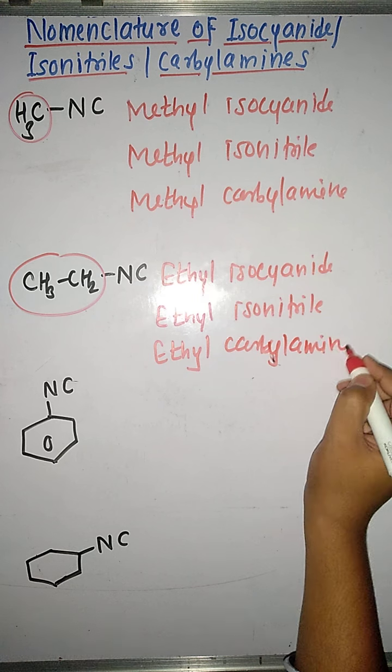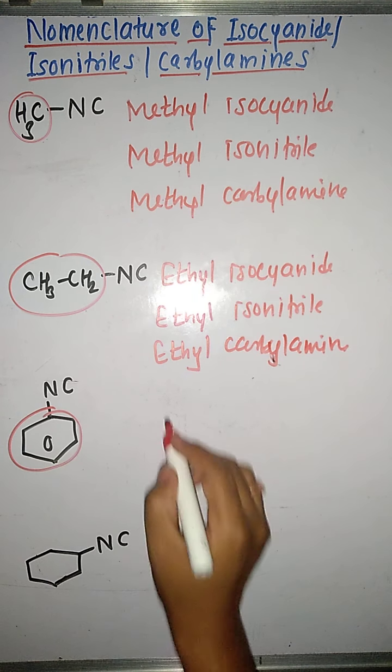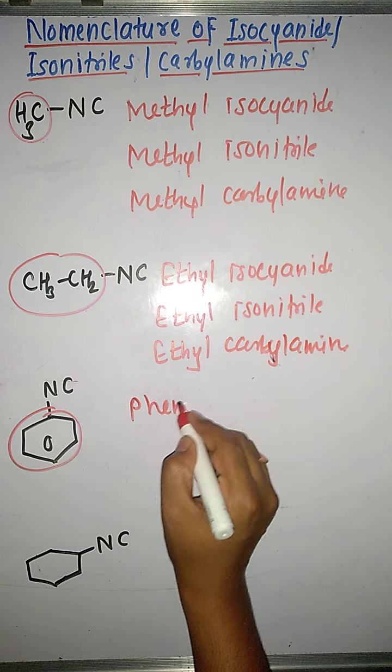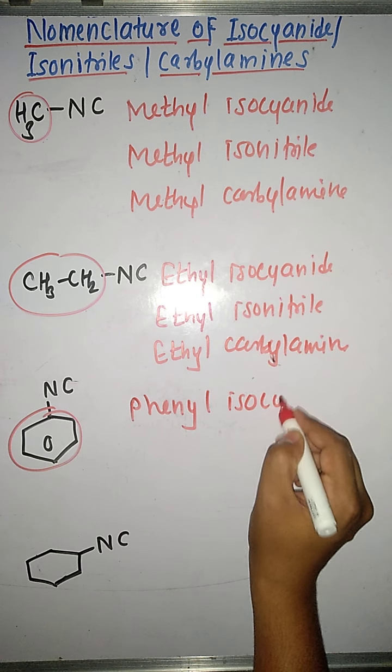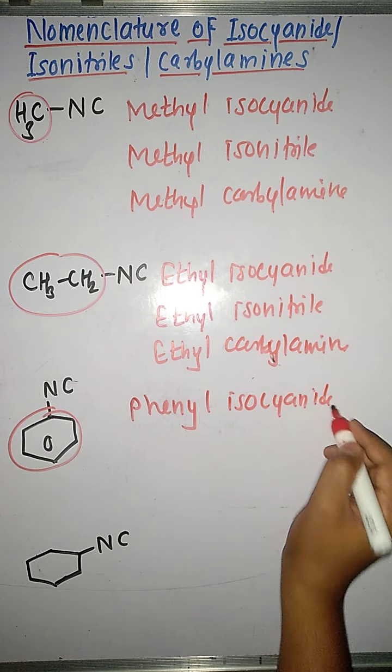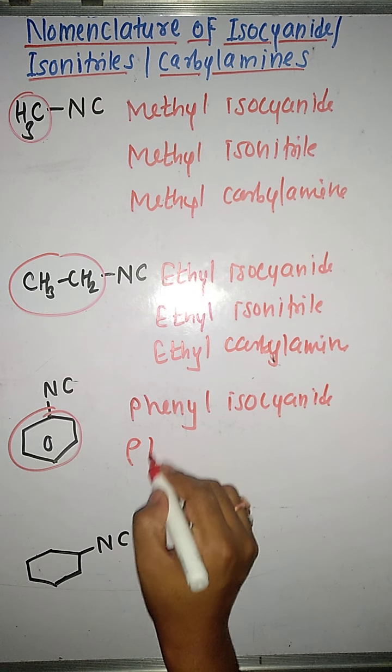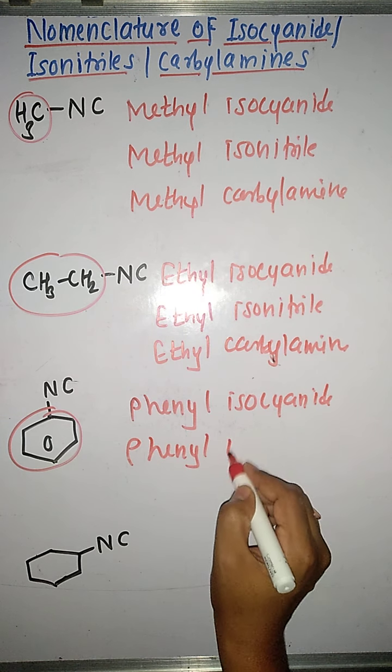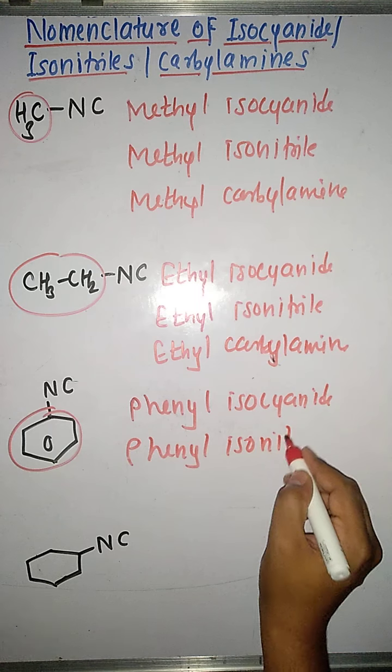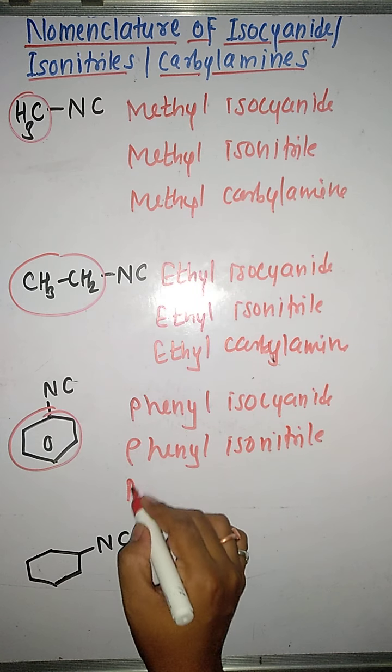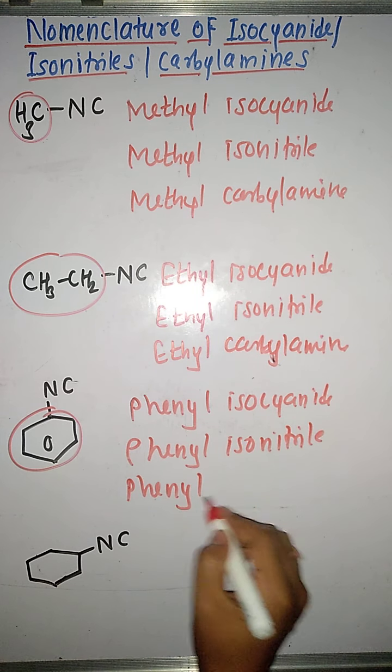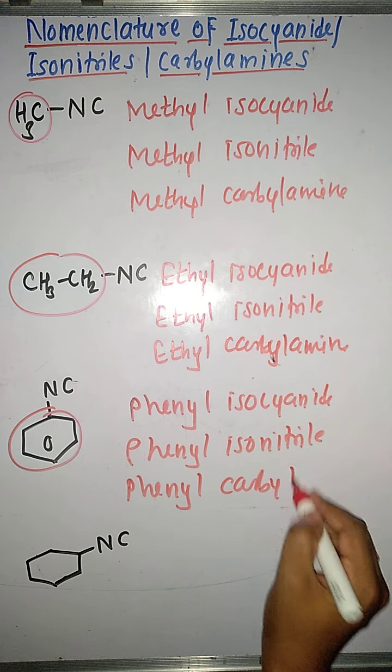Then the next molecule has a phenyl group. So we will write the word phenyl first. So the name can be phenyl isocyanide. In the same way it can also be written as phenyl isonitrile or phenyl carbilamine.